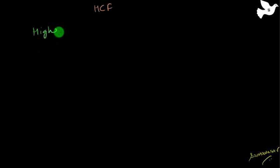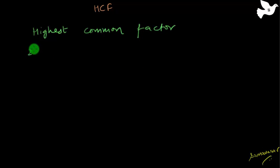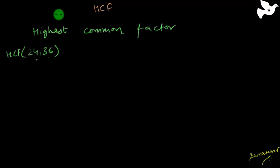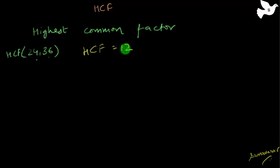Now let us look at the HCF. HCF is the highest common factor. Let me take 24 and 36. There will be a number which will be a common factor of both these numbers, and it will be the highest such number. Just by looking at it, you may know that the HCF of these numbers will be equal to 12, because 12 is a factor of 24 (24 = 12 × 2) and also a factor of 36 (36 = 12 × 3). But how do we find it out?